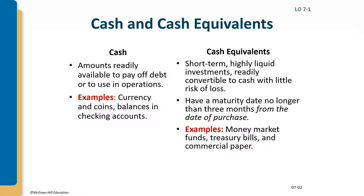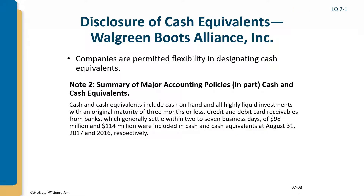You're focused on when it's due from the date of purchase — if it's within three months, it's a cash equivalent. Companies must report information about cash and cash equivalents in their summary of major accounting policies. Here's an example of Walgreens Boots Alliance and how they describe what's in their cash and cash equivalents.